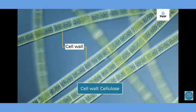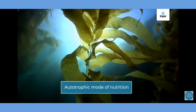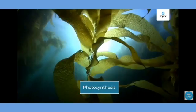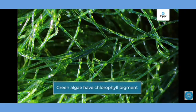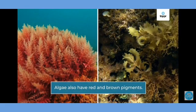Thallophyta have an autotrophic mode of nutrition, meaning they can prepare their own food because they have chlorophyll, a green color pigment. Therefore, they are known as photosynthetic. Some of them have different color pigments — as you can see, red algae have red, green, and brown pigments, while the majority have the green chlorophyll pigment. Algae carry out photosynthesis.